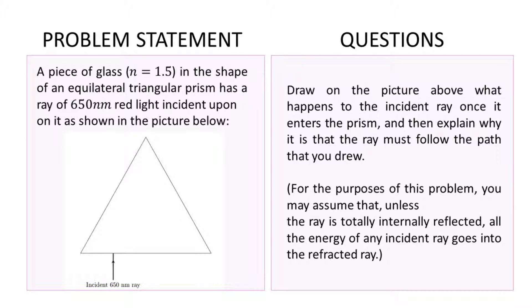So here's the problem. Feel free to pause the video to copy the problem so that it's easy for you to follow along. Here is the question statement: a piece of glass with index of refraction 1.5 in the shape of an equilateral triangular prism has a ray of 650 nanometer red light incident upon it as shown in the picture. We want to draw what happens to the incident ray once it enters the prism and explain why the ray must follow the path drawn. You may assume that unless the ray is totally internally reflected, all the energy of the incident ray goes into the refracted ray.